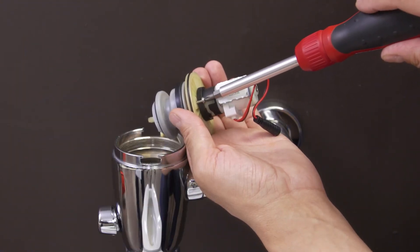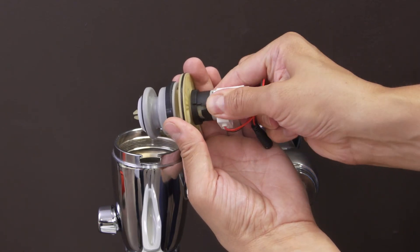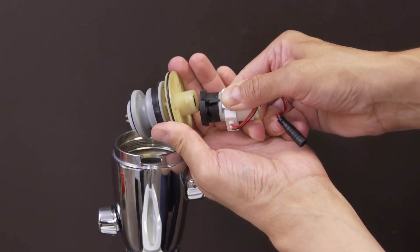First, remove the locking screw. Rotate the solenoid a quarter turn counter clockwise and separate it from the piston.